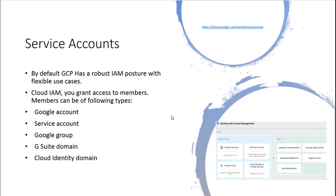By default, GCP has a robust IAM posture, and you can grant access via Google accounts, Google Groups, G Suite domains, etc. To create a service account, go ahead and set up a new service account, create new credentials, and add the service account key. The public and private key will typically be a standard P12 file or JSON, loaded using the Google API client library. For server-to-server interactions: create the service account in the API console, then your application prepares to authorize API calls by requesting an OAuth 2.0 token, and uses that token to call the APIs.